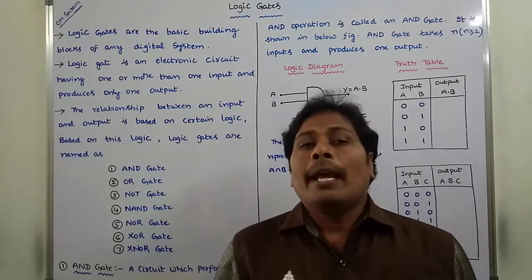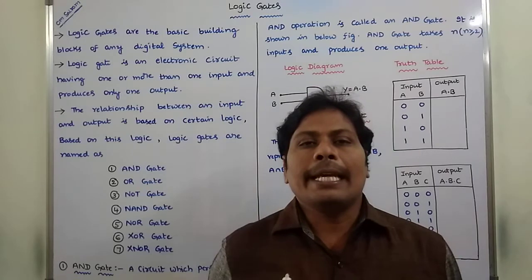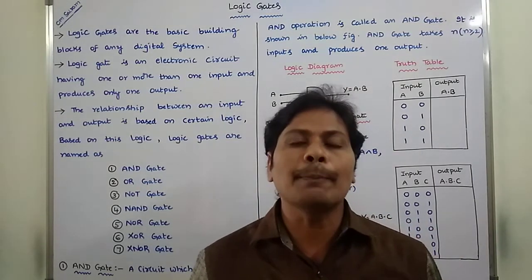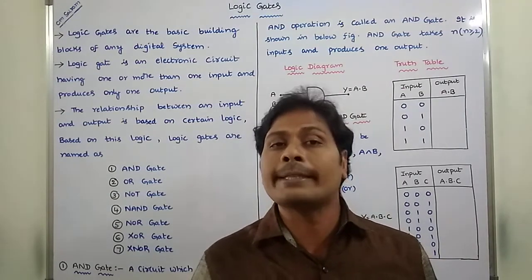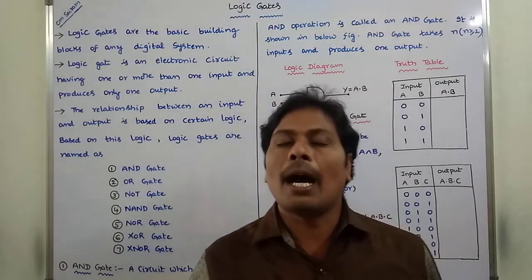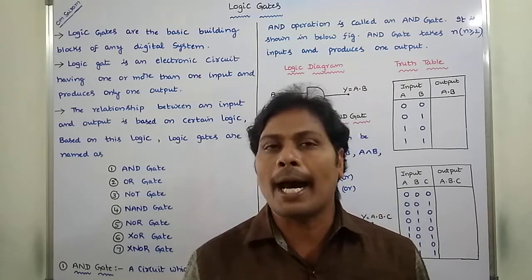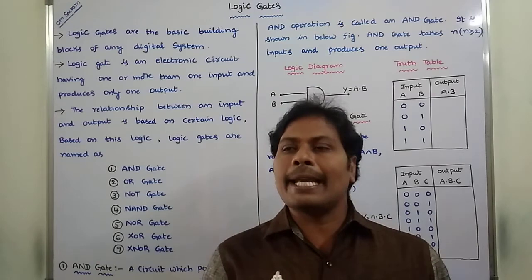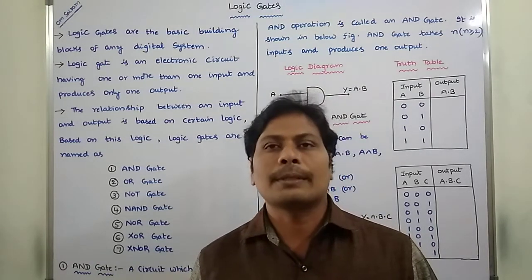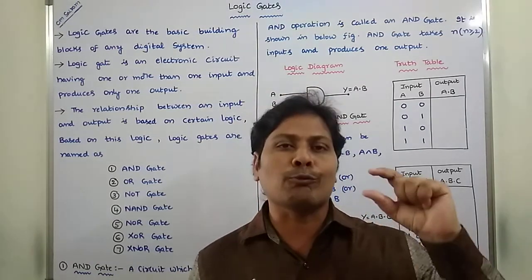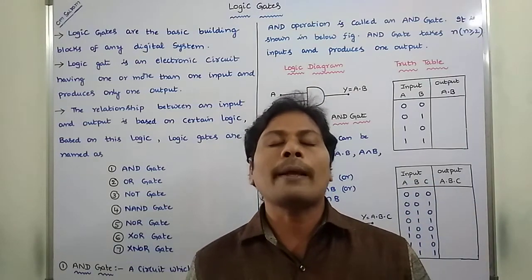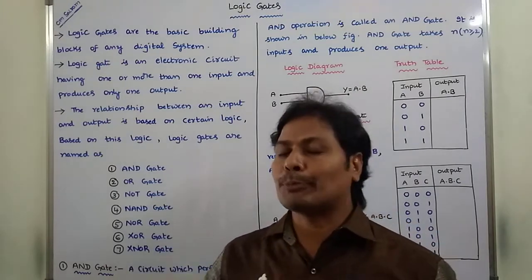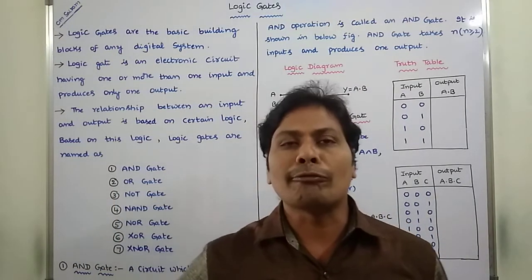A logic gate is an electronic circuit. It can take one input or more than one input and it produces only one output. That means a logic gate is nothing but one electronic circuit — it takes either one input or more than one input, processes that input, and produces only one output.